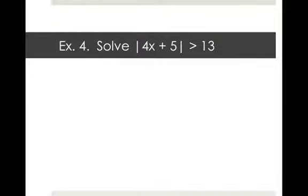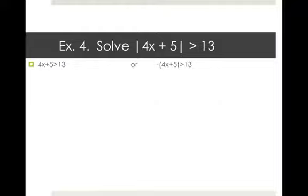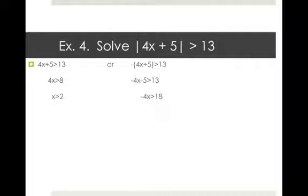Our first example, example 4, is: solve absolute value of 4X plus 5 greater than 13. It's an absolute value with greater than, so we think 'or'. We'll have 4X plus 5 greater than 13, or the opposite, negative 4X plus 5 greater than 13. For 4X plus 5 greater than 13, subtract 5 from both sides to get 4X greater than 8, then divide both sides by 4 to get X greater than 2.